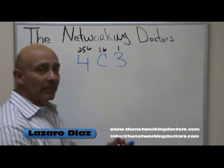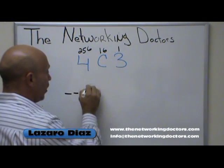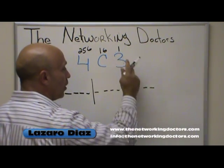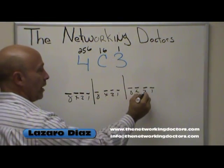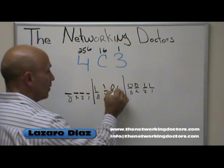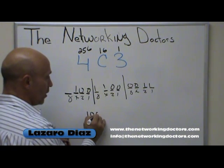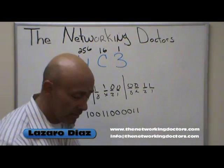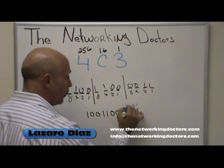Every hexadecimal digit is 4 bits long. So for the digit 4: bits are 0100. For C (which is 12): bits are 1100. For 3: bits are 0011. So putting it all together, the full binary representation is 0100 1100 0011.